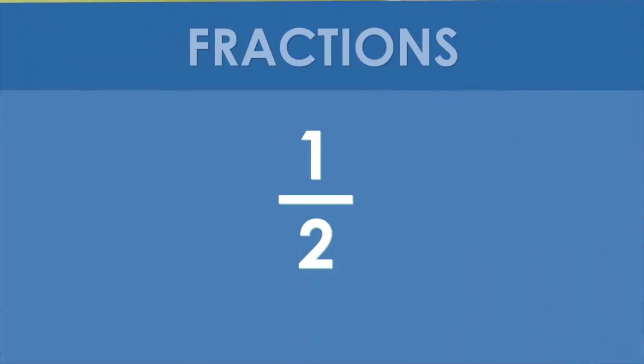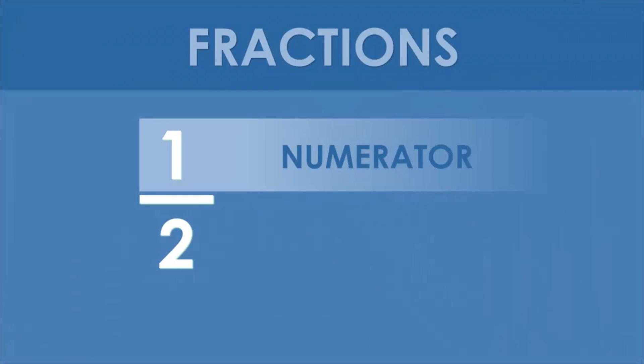Because fractions have got a number above the bar called numerator and a number below it called denominator. The denominator indicates the number of parts in which I can divide a whole number.